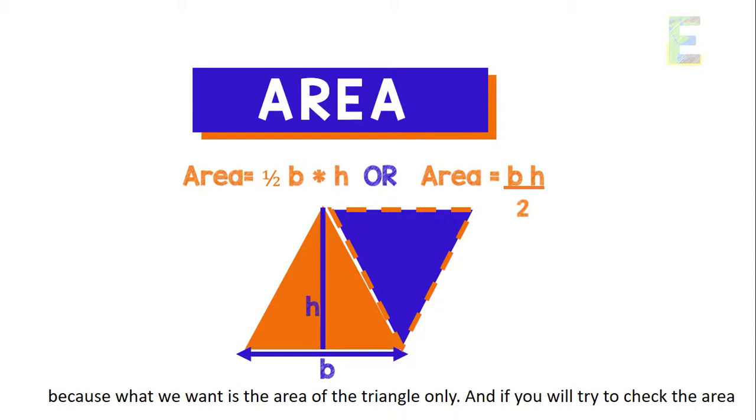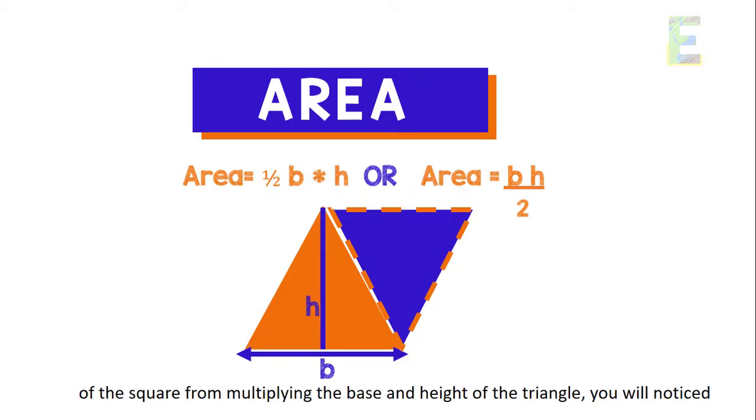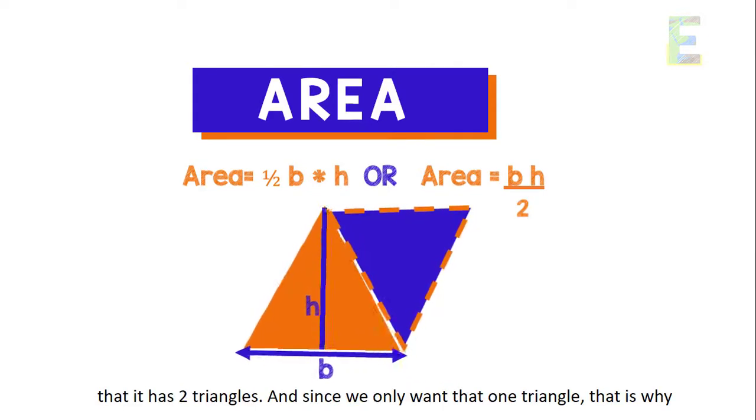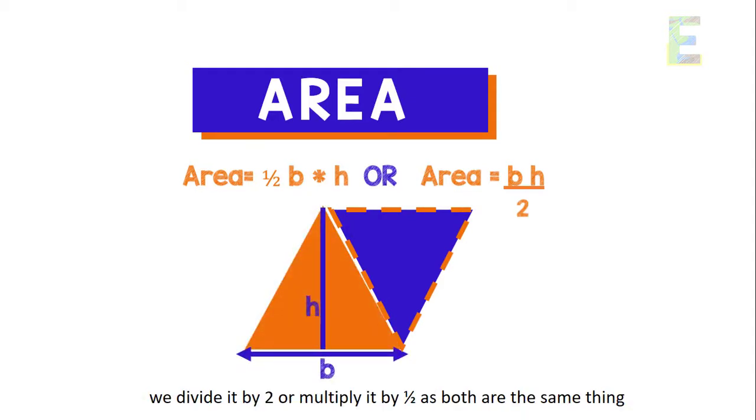And if you will try to check the area of the square from multiplying the base and height of the triangle, you will notice that it has 2 triangles. And since we only want that 1 triangle, that is why we divide it by 2 or multiply it by 1 half as both are the same thing.